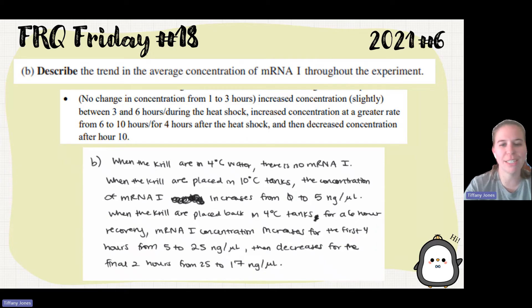So a student says when the krill are in 4 degrees Celsius water, there is no mRNA 1. When the krill are placed in 10 degree tank, the concentration of mRNA increases from 0 to 5. When the krill are placed back into 4 degrees for 4-hour recovery, the mRNA concentration increases for the first 4 hours, then decreases for the final 2 hours. And this must give you specific numbers from the graph.